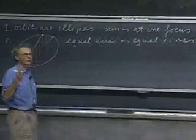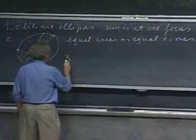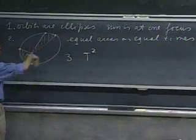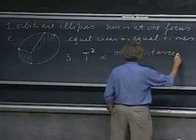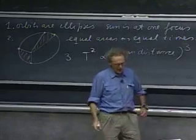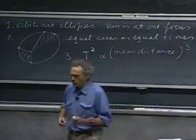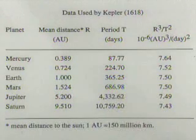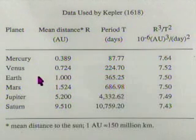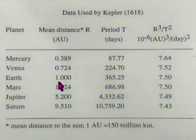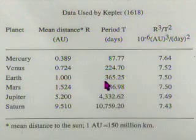This equal-areas law has the smell of conservation of angular momentum. Kepler's third law states that the orbital period squared is proportional to the third power of the mean distance to the Sun. He was very pleased with that result and wrote jubilantly about it. The data Kepler had available in 1618 — largely from observers like Tycho Brahe — listed six known planets and their mean distances to the Sun in astronomical units, with Earth at one AU taking 365 days, Jupiter about 12 years, and Saturn about 30 years.